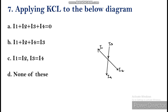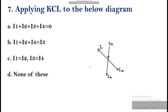The seventh question: applying KCL to the diagram. Kirchhoff's current law states that the sum of incoming currents at a node equals the sum of outgoing currents. Here, the only incoming current is I3, and the outgoing currents are I1, I2, and I4. So the answer is option B: I1 + I2 + I4 = I3.